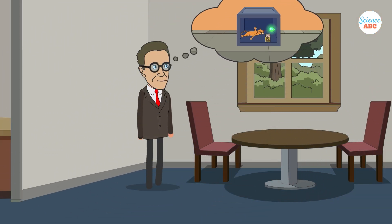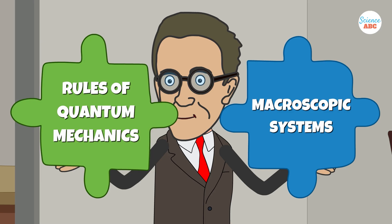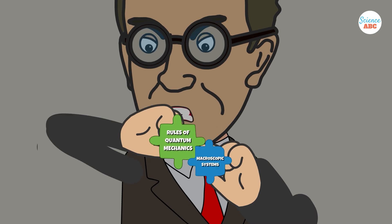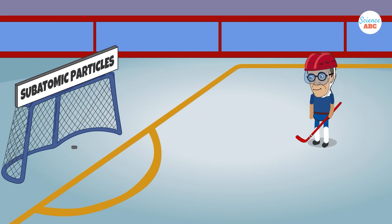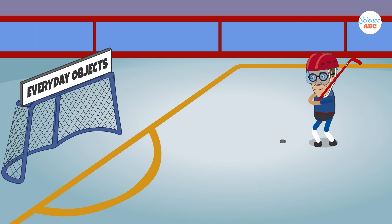But it's important to understand, Schrodinger didn't actually believe this described physical reality. His goal was to show how the logic of quantum mechanics breaks down when applied to everyday objects. He argued that the fuzzy, probabilistic rules of quantum particles don't scale neatly to larger systems like a cat.